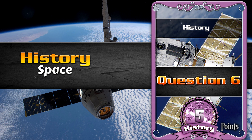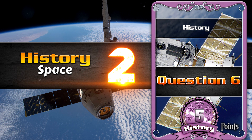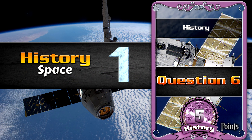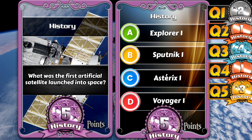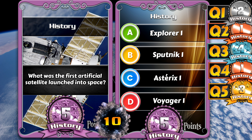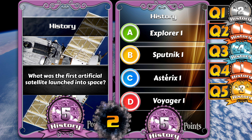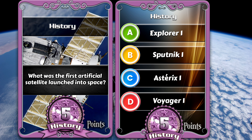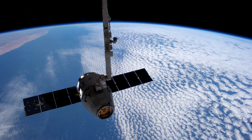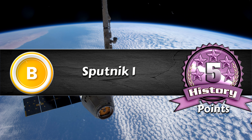Question 6. History. Space. What was the first artificial satellite launched into space? Explorer 1. Sputnik 1. Asterix 1. Voyager 1. 3, 2, 1. The answer is Sputnik 1.